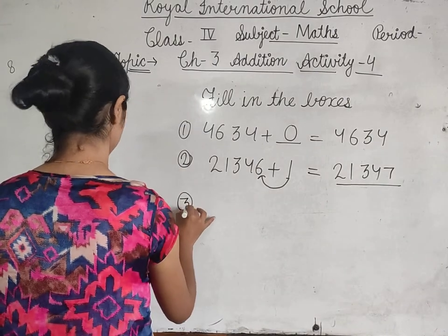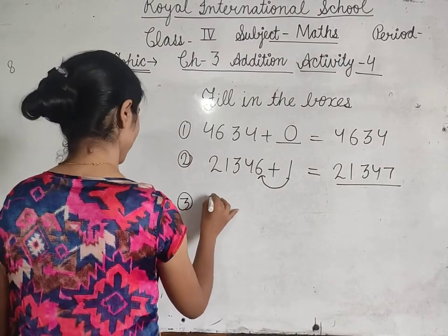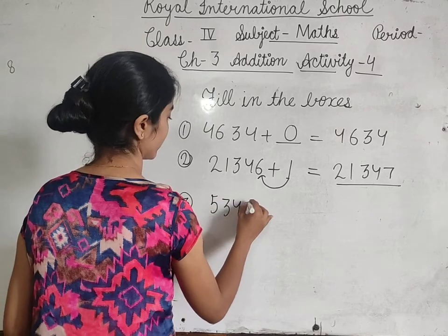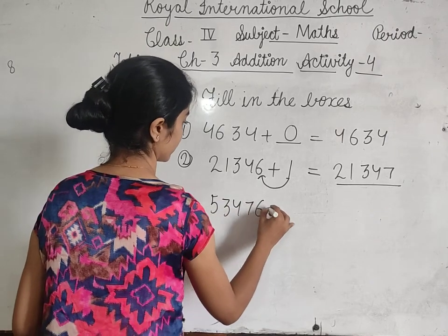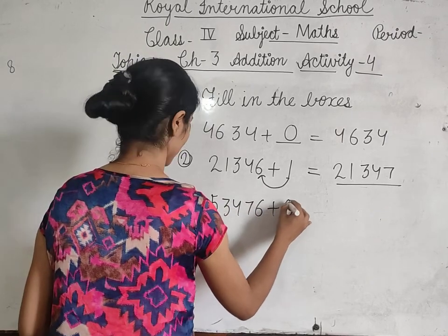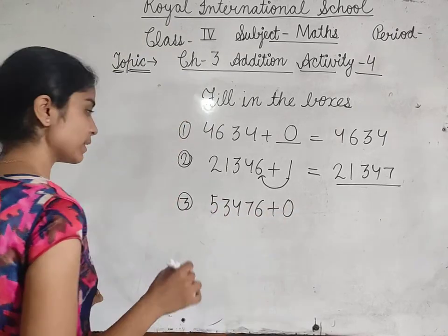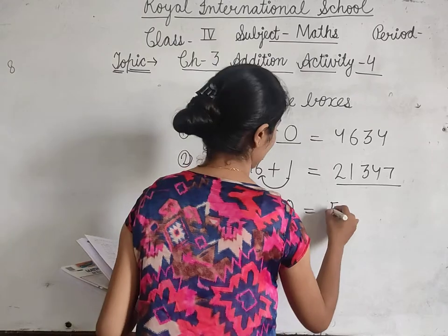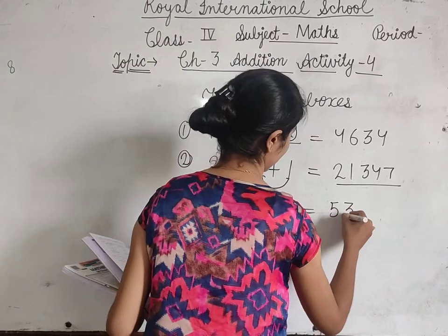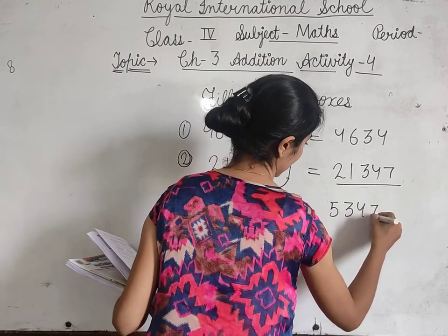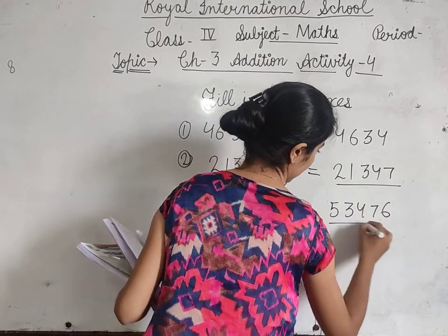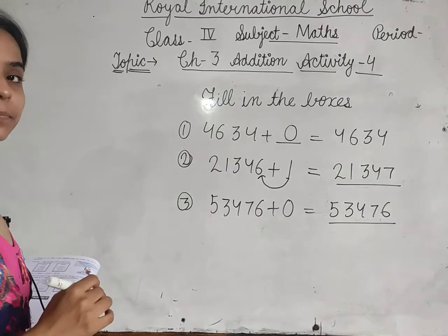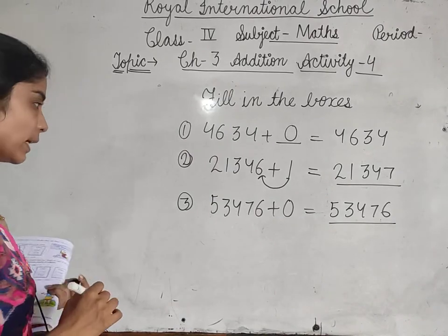Then third one: 53,476 plus 0 — again plus 0, तो same number आएगा। Answer is 53,476. Done.